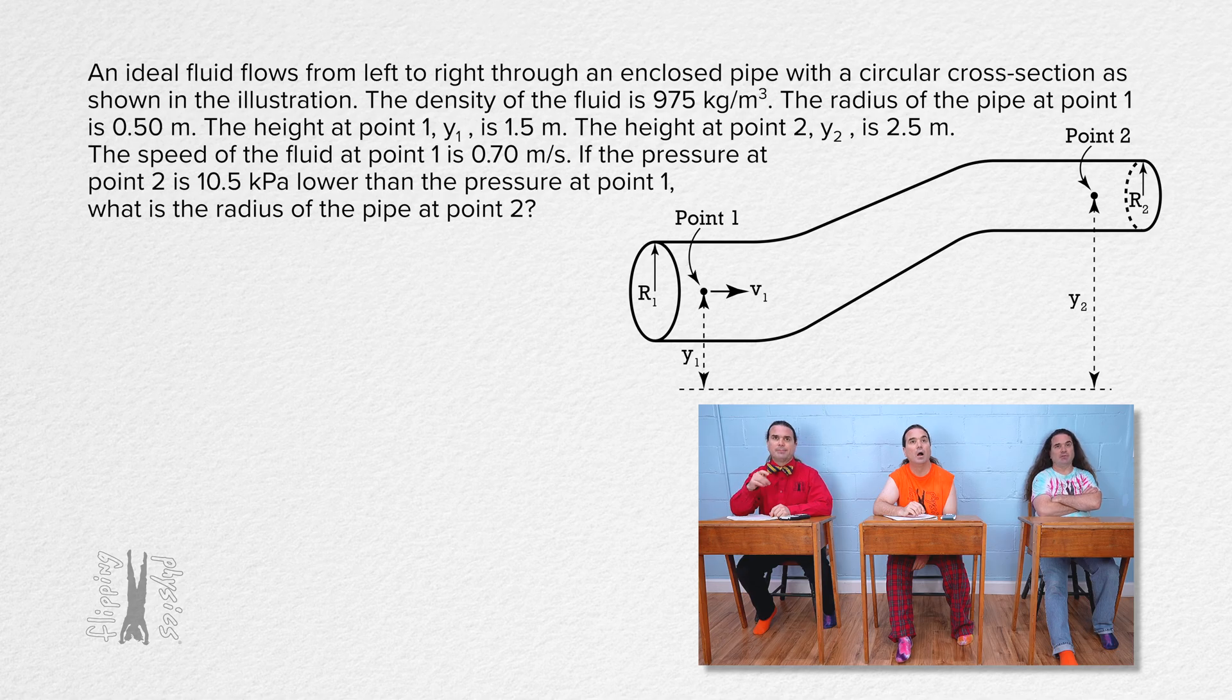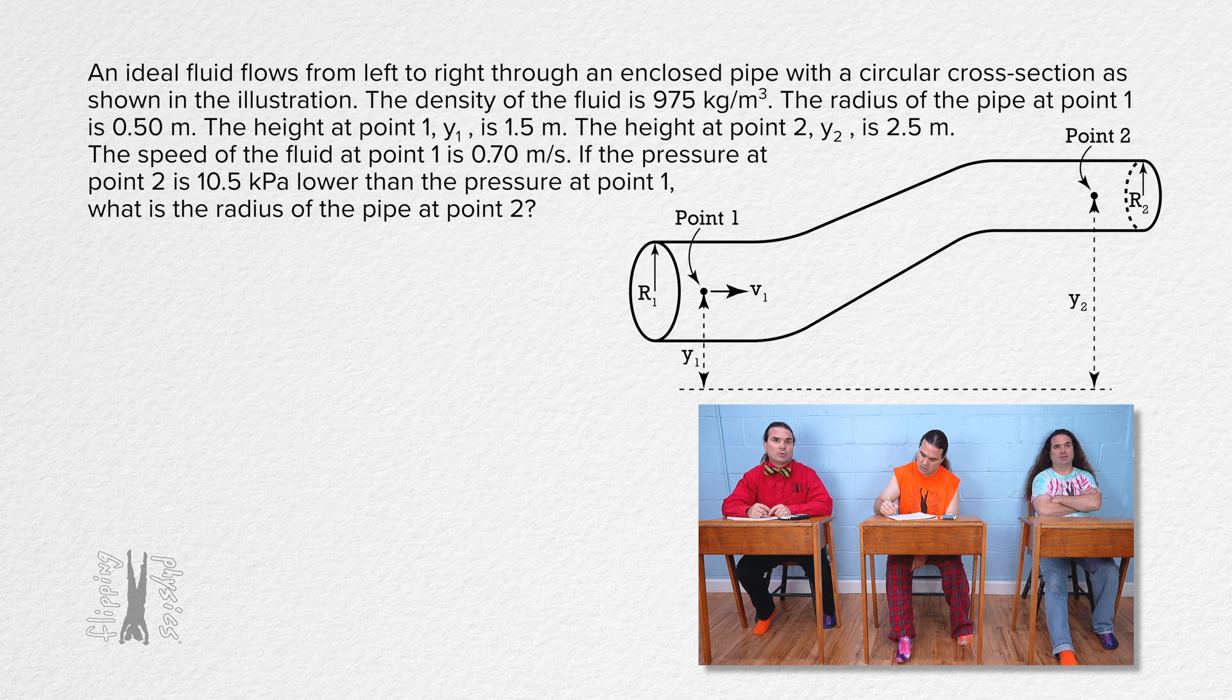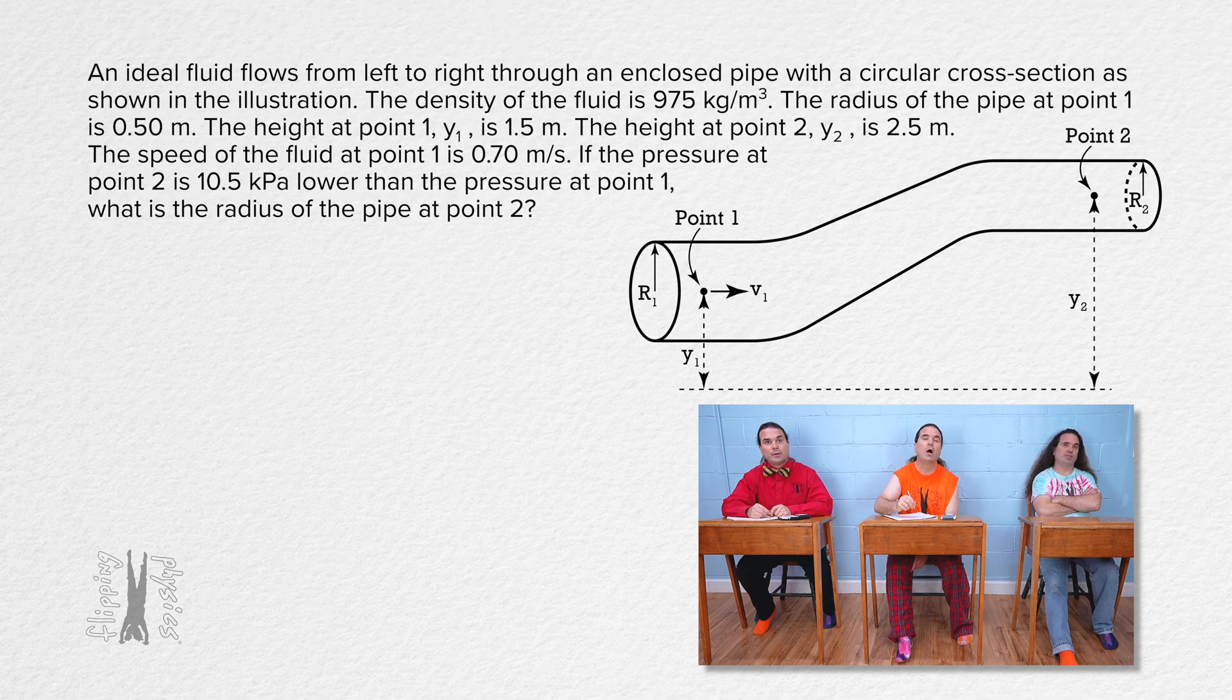The density of the fluid is 975 kilograms per meter cubed. The radius of the pipe at point 1 is 0.50 meters. The height at point 1, y sub 1, is 1.5 meters. The height at point 2, y sub 2, is 2.5 meters. The speed of the fluid at point 1 is 0.70 meters per second. If the pressure at point 2 is 10.5 kilopascals lower than the pressure at point 1, what is the radius of the pipe at point 2?